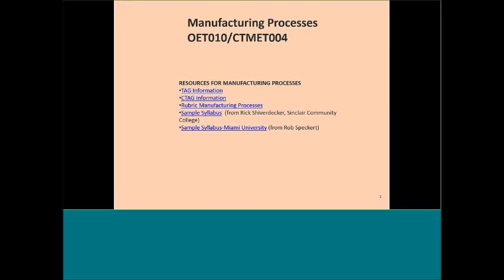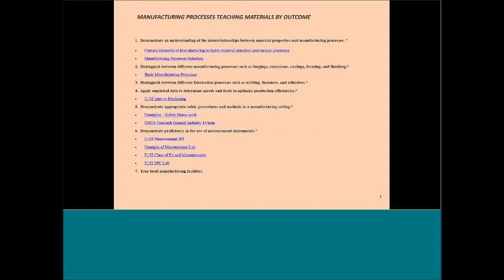When you look at the manufacturing processes, OET-010, the resources we've been using — the CTAG information — I will send this out, but you can click those links and get to all that information. The rubric for the manufacturing processes, and Rick and Rob have a course syllabus which you will also see mine in a few moments. When you look at the manufacturing processes teaching materials outcomes, this is the flow I'm going to be using.